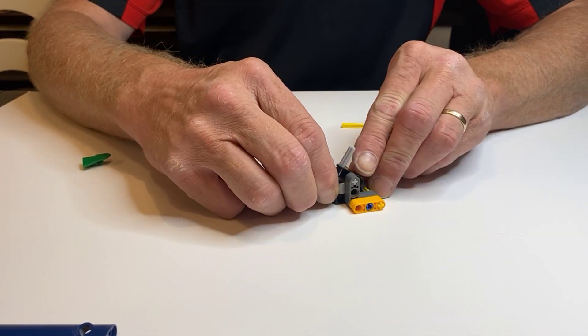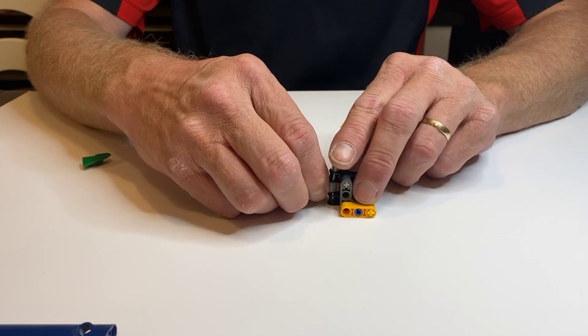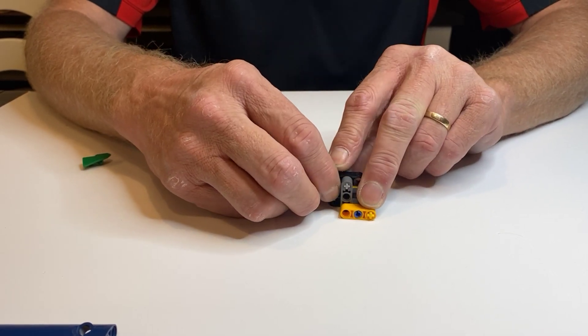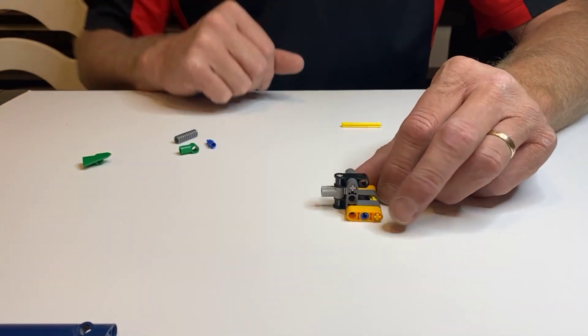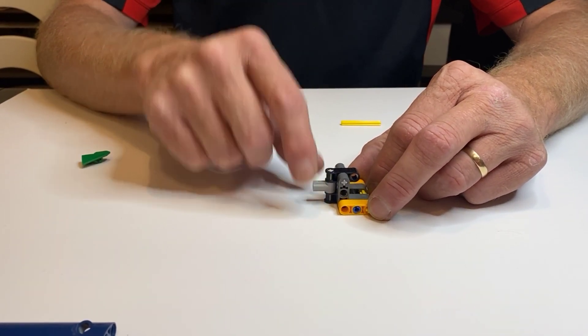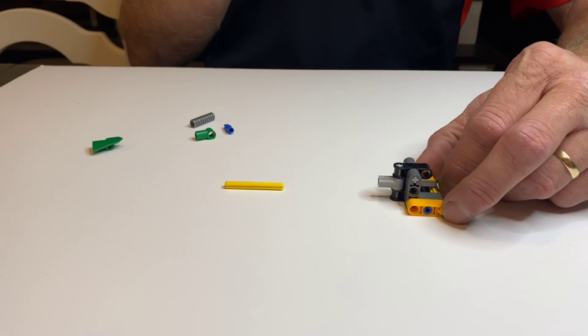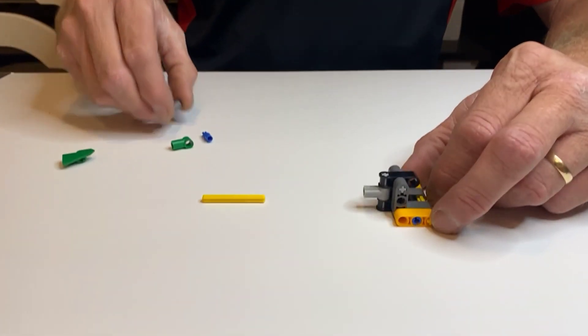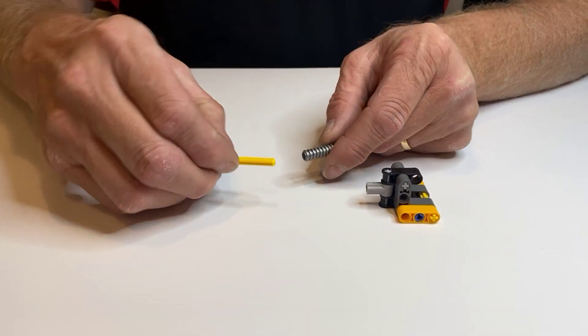Take your gray catch and put it on there like so. We're going to put this right here and put this right here. Rotate this down and push the axle through just like that, and the catch will move.